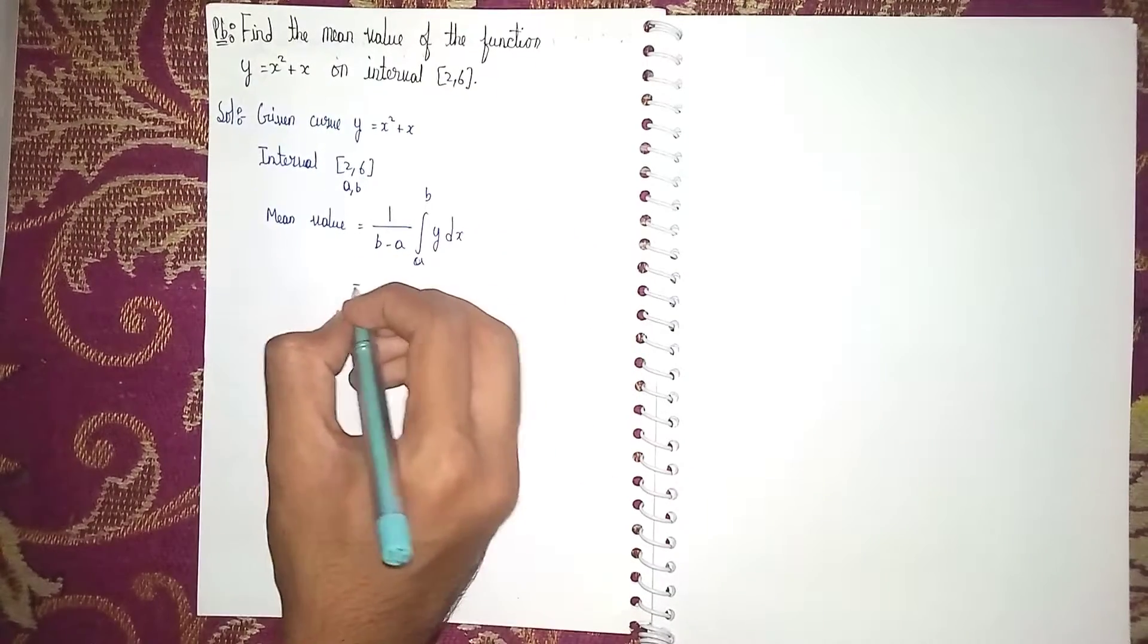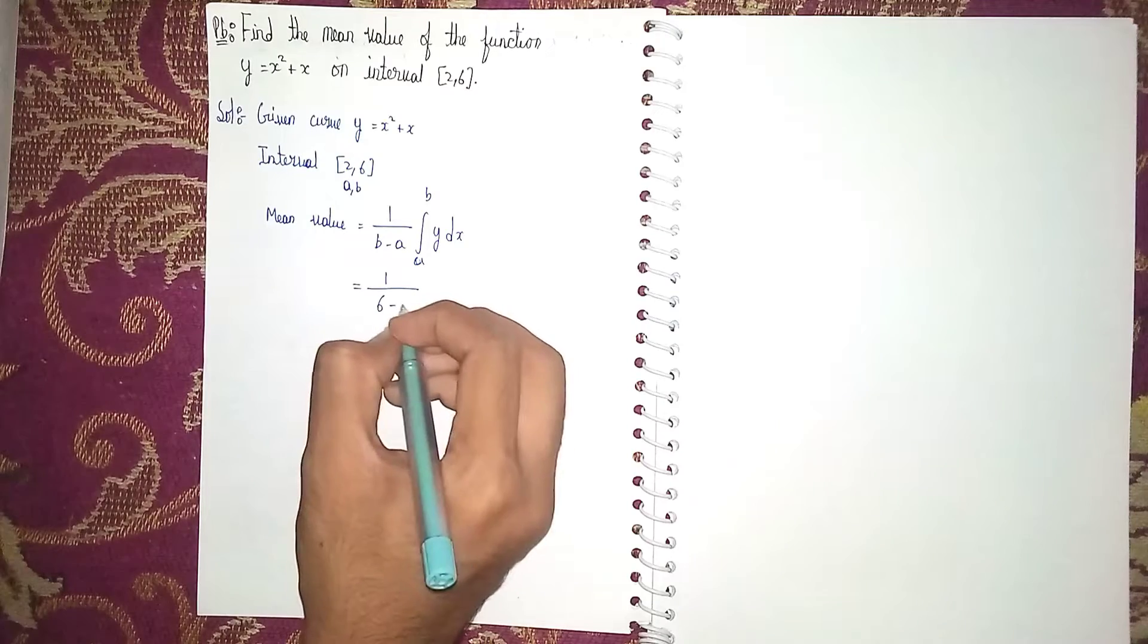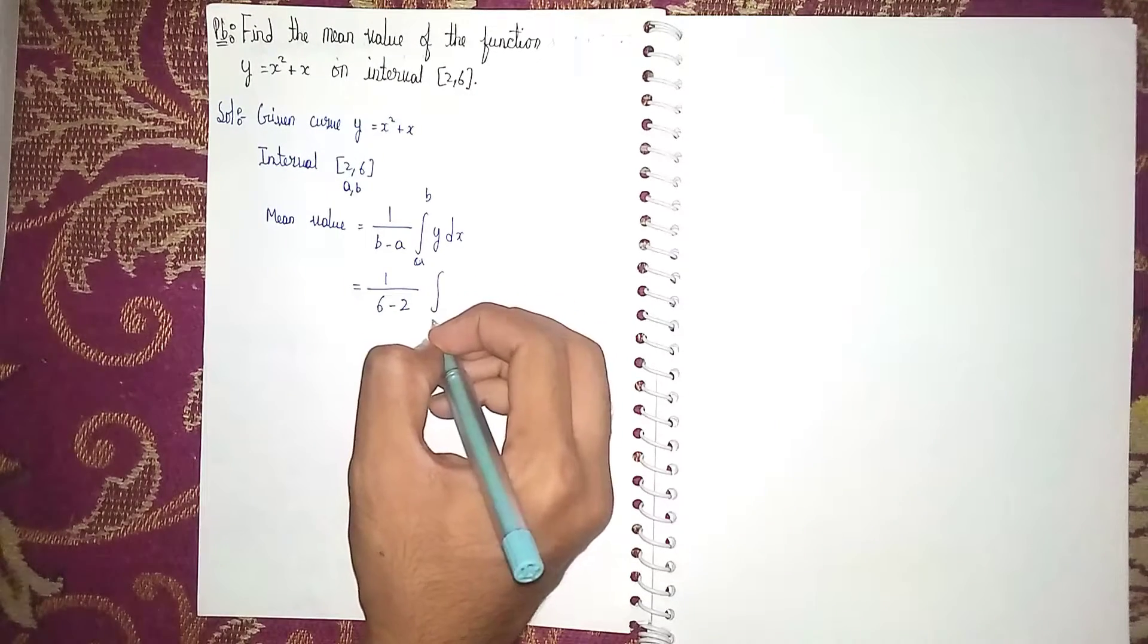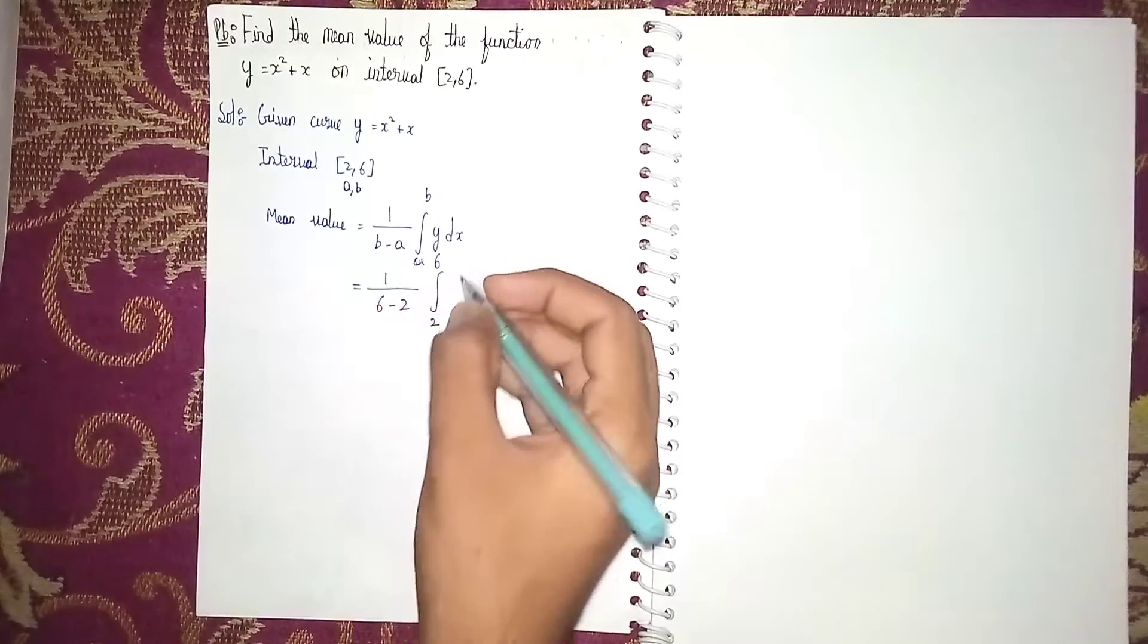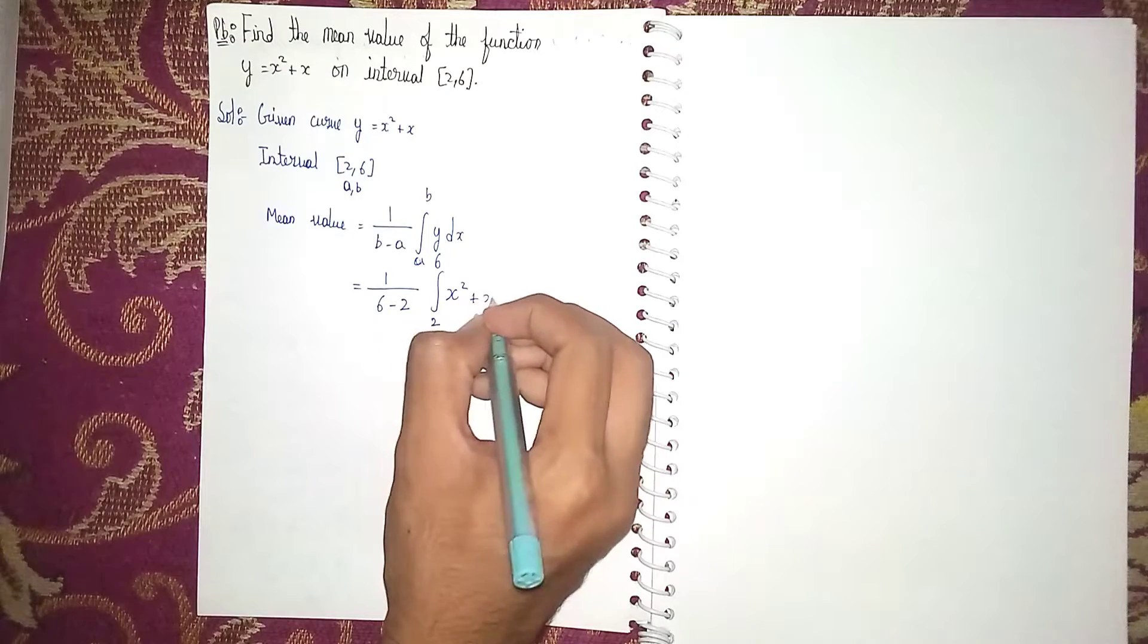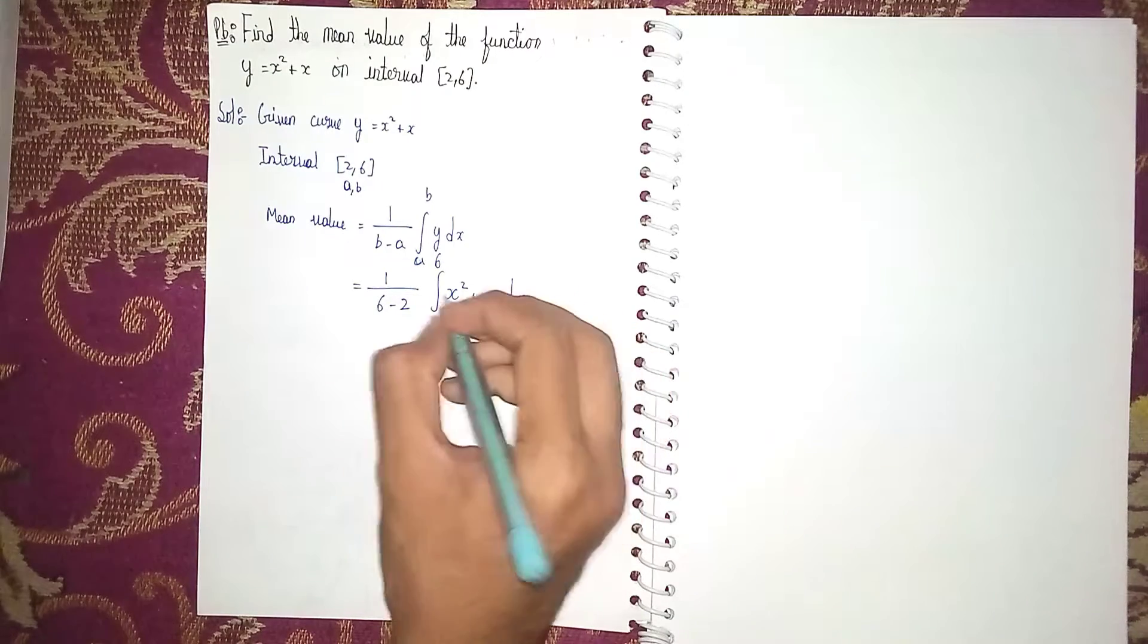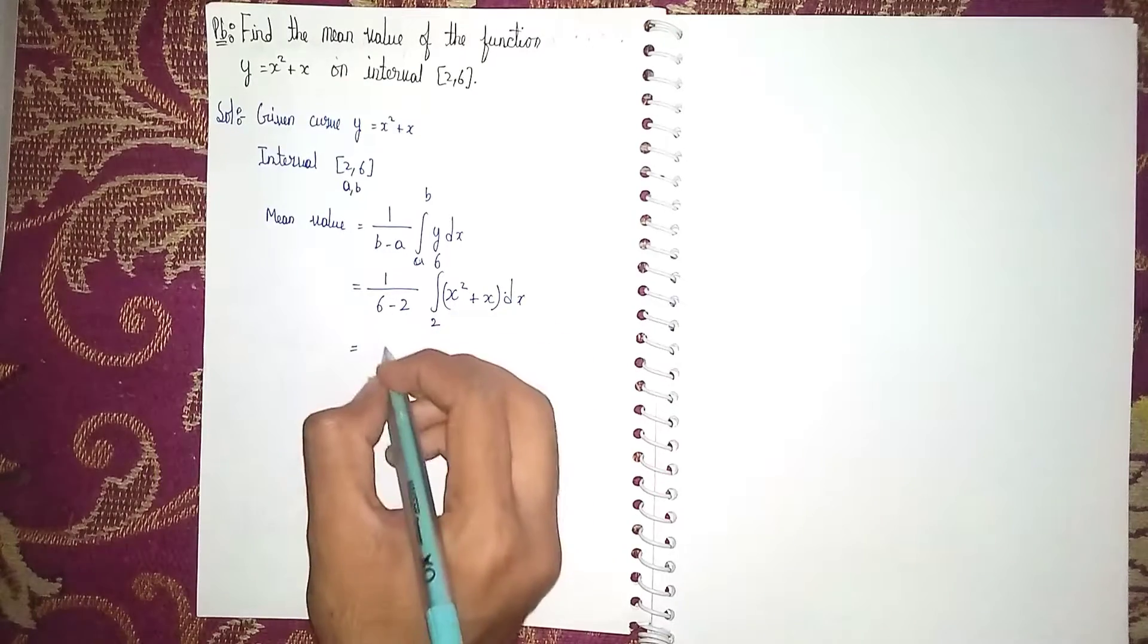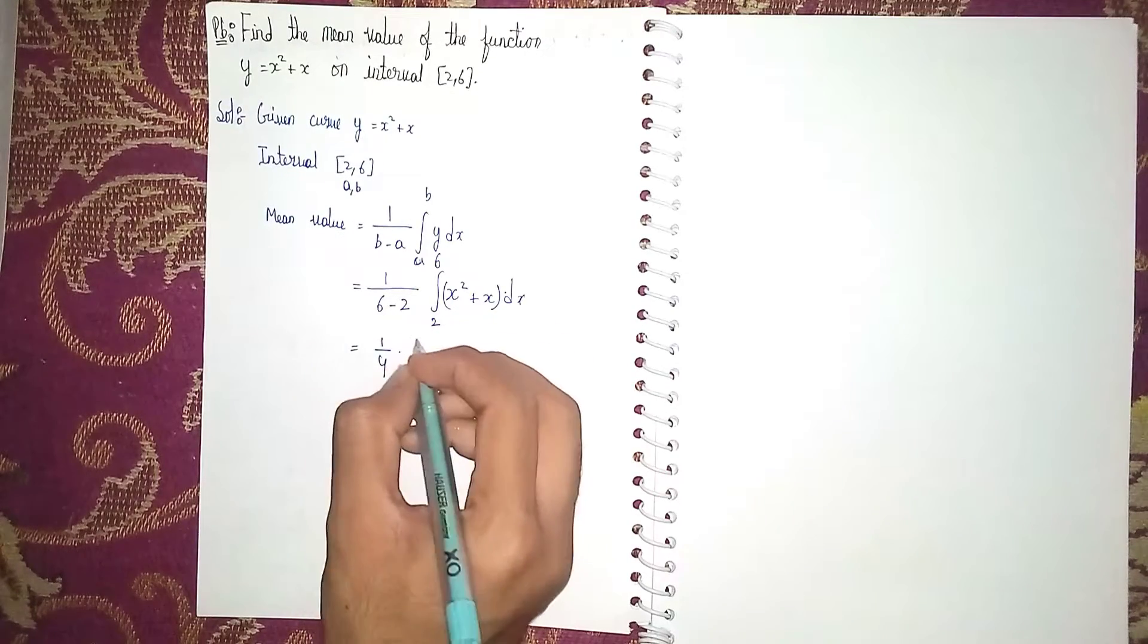Now, 1/(6 - 2) × integral from 2 to 6 of (x² + x) dx. Here, 6 minus 2 is 4, so 1/4 times the integral from 2 to 6.